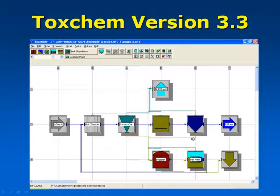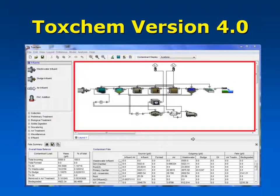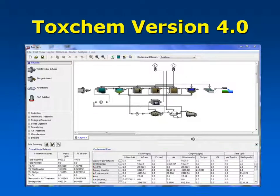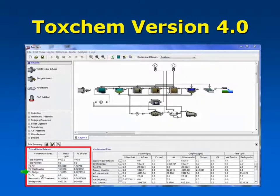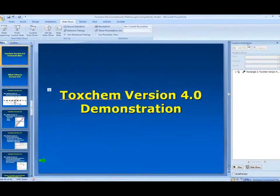If you've seen ToxChem before, you may have seen the older version 3.3 interface. As of about six weeks ago, we released ToxChem version 4.0, which has a fully redesigned interface and a newly updated database of chemical component properties. It's used by taking unit process models from the left-hand side, placing them onto the drawing board to create your plant, then adding contaminants and getting a summary of their fate on a unit-process or overall mass-balance basis — showing how much was biodegraded, lost to air, or taken away through sludge.